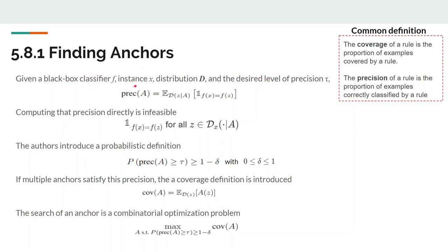Given a black box classifier F, an instance x, a distribution D, and the desired level of precision tau, the precision is defined as the expectation of the number of correctly evaluated neighbors of perturbations in D. However, computing that precision directly is infeasible because it will require evaluating the indicator function for all sets belonging to the conditional distribution when the rule A applies.